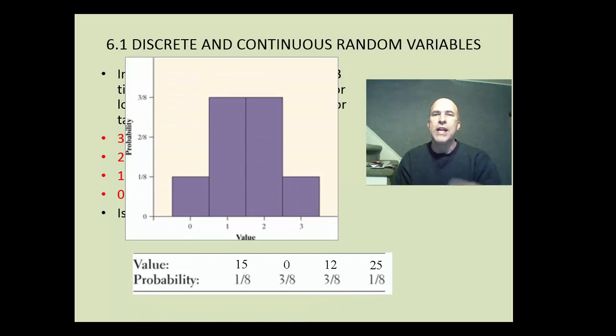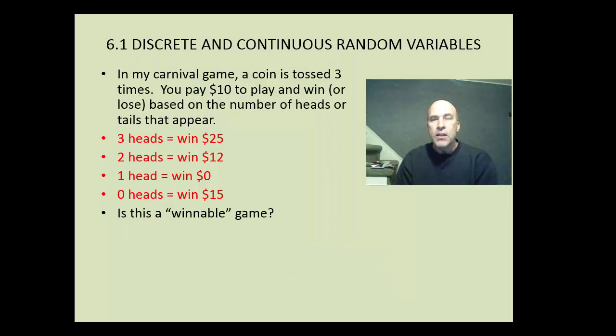And we could also use a histogram to do this as well. So along the x-axis, we have the number of heads: zero, one, two, or three, along with the probabilities one-eighth and three-eighths. And you see that this is a symmetric probability distribution.